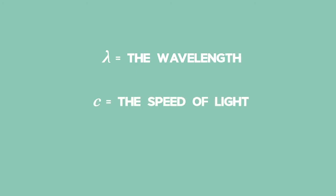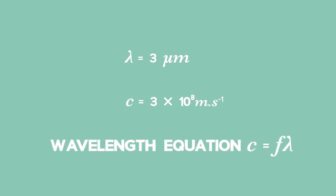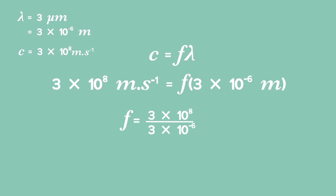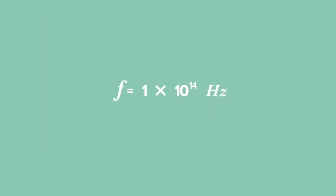Let's make a list of what we know: lambda, the wavelength, and C, the speed of light. That means we can use the wave equation. But remember that wavelength needs to be in meters for this to work. When we substitute and solve for F, we find this very high frequency of 1 times 10 to the power of 14 hertz. Light waves have a very high frequency.